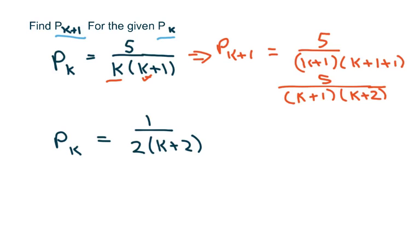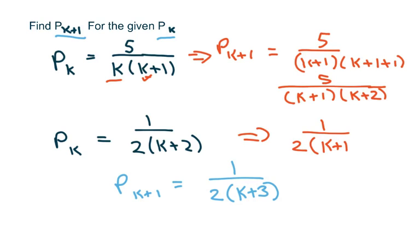So when we have this one and we're going to do p with k plus 1, you're just going to do 1 over 2 times k plus 3, because k plus 3 would be the next term. Again, if you want to write it out, there would be 2 times k plus 1, that's for this piece, plus 2. And there's where you get the 3.